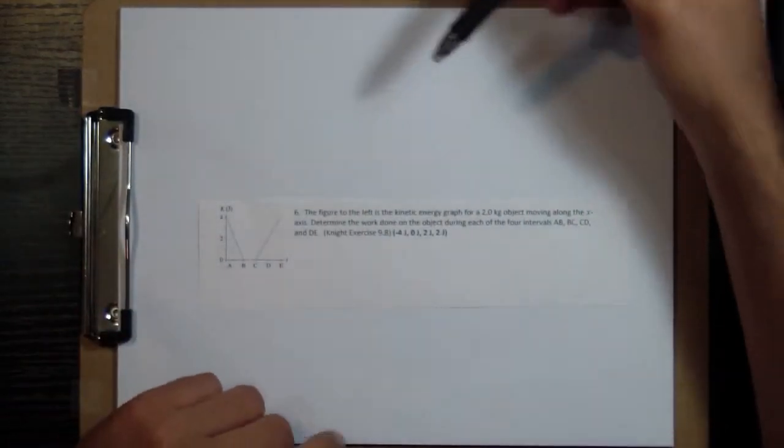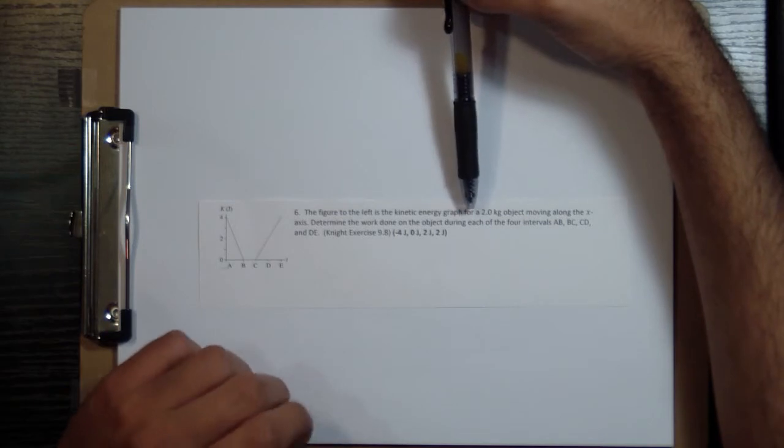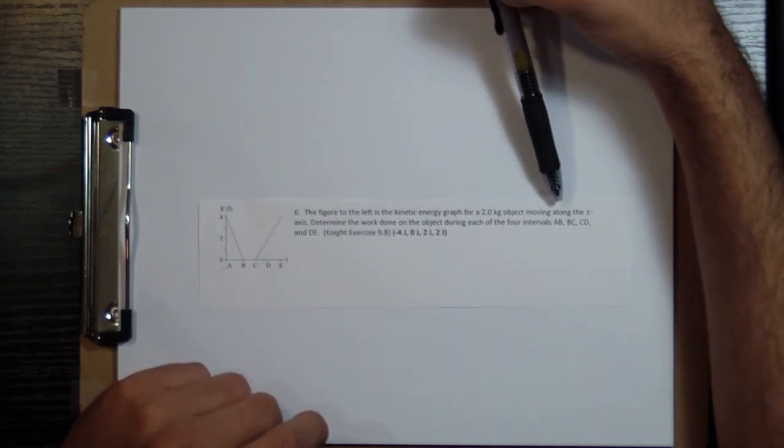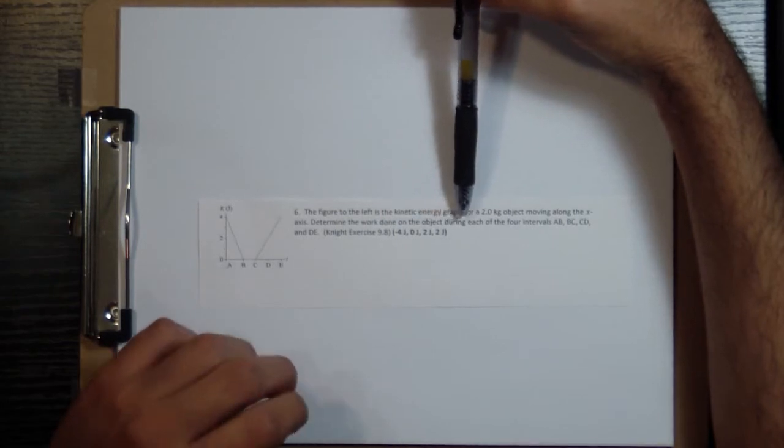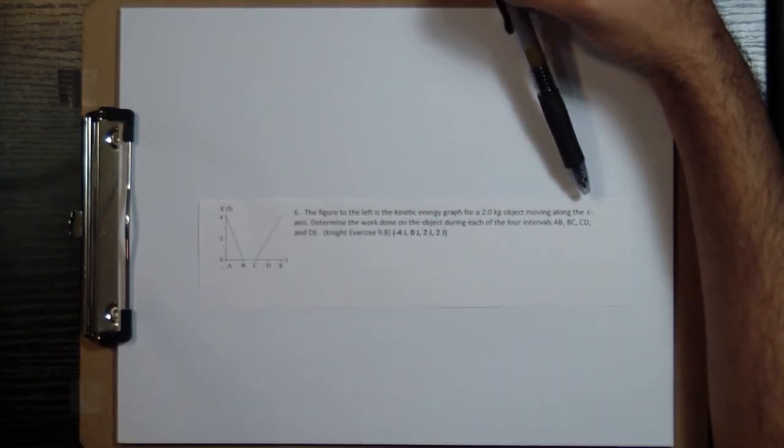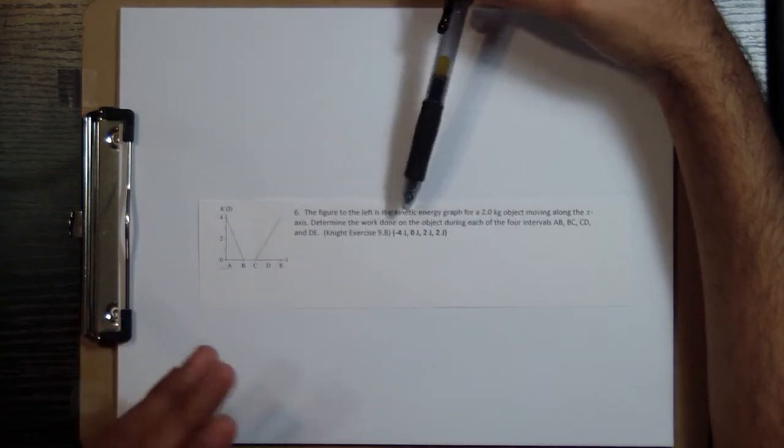Alright, let's look at problem number six. I'll read it to you. The figure to the left is the kinetic energy graph for a two kilogram object moving along the x-axis. Determine the work done on the object during each of the four intervals AB, BC, CD, and DE.